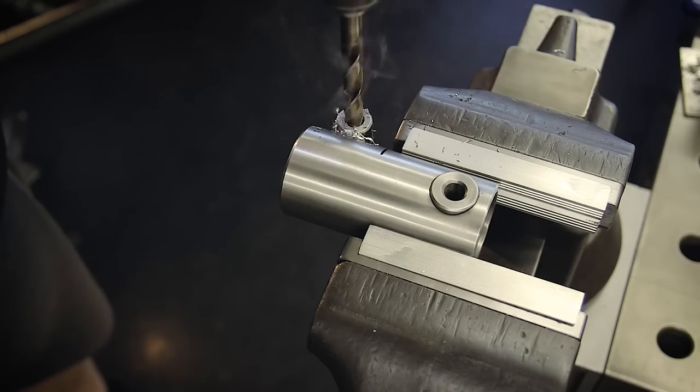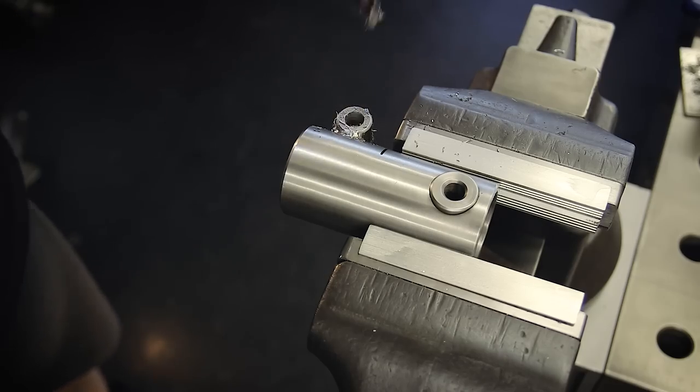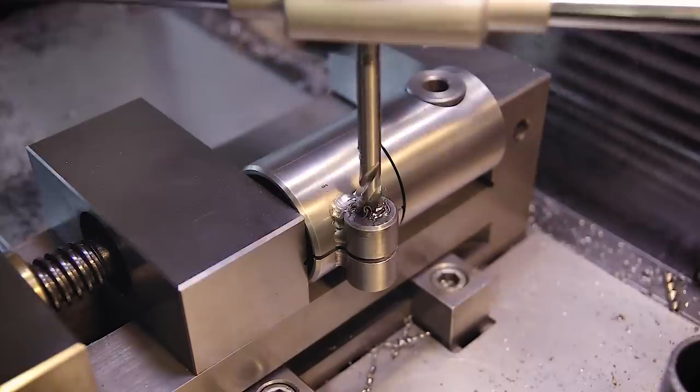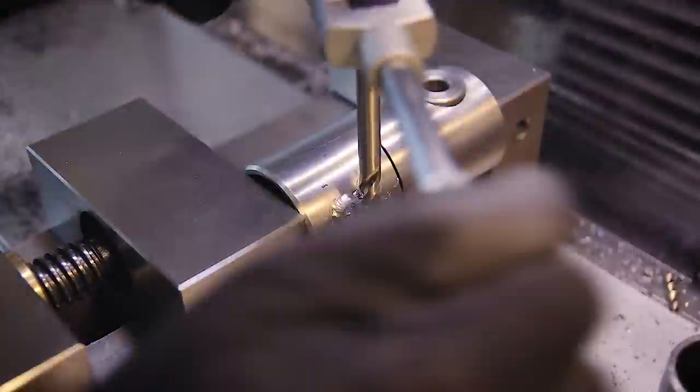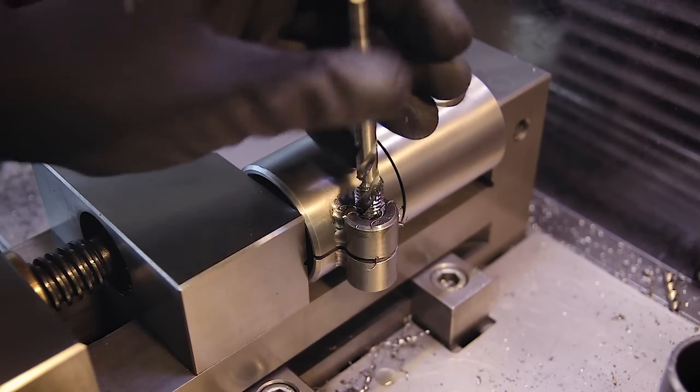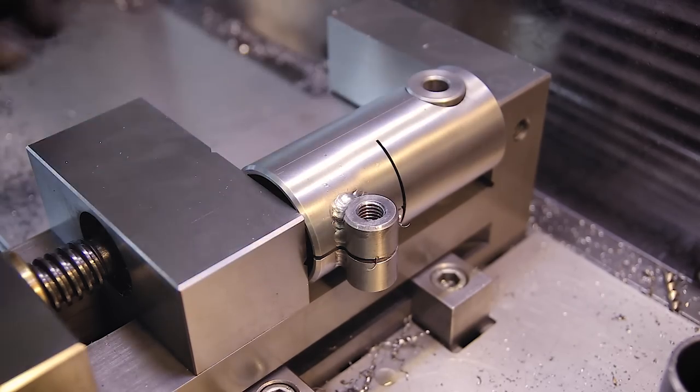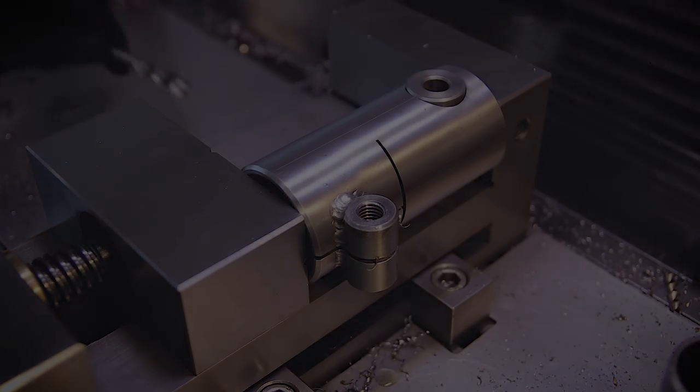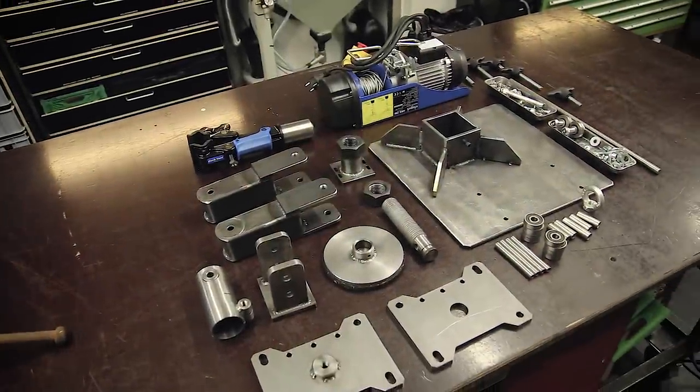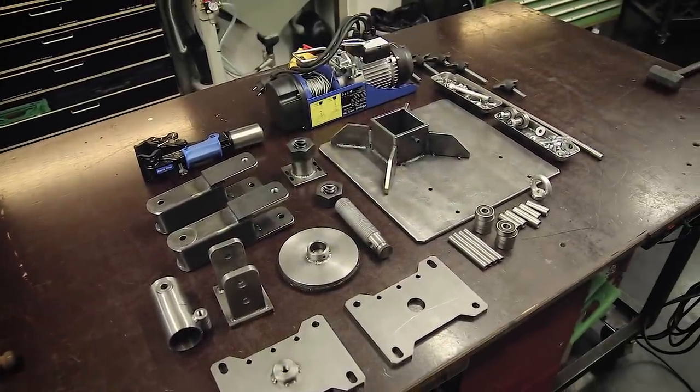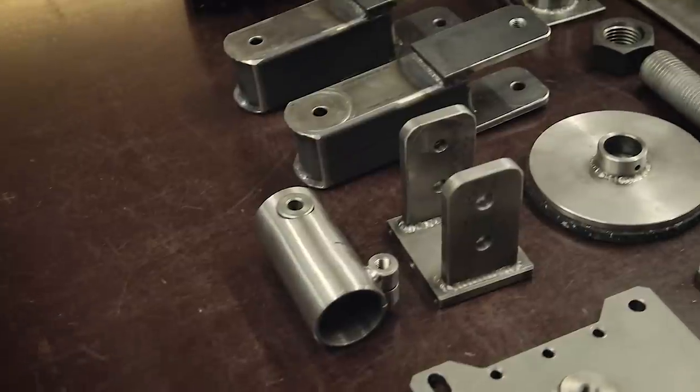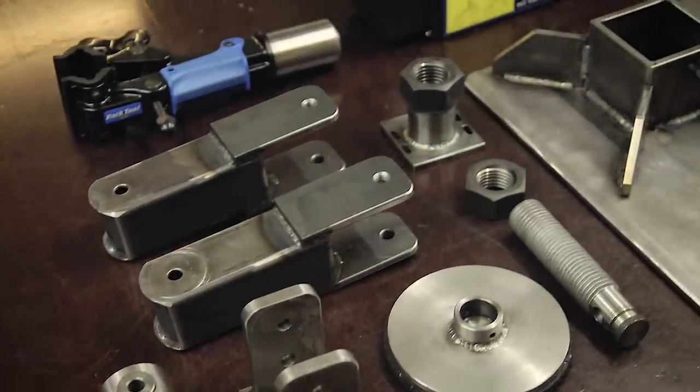Now I just need to open up the hole on one side and tap the other side, and with that the clamp is almost finished. With the clamp done, it's time to assemble everything. So here's all the parts laid out, but before I do that there's a few more minor things to address.